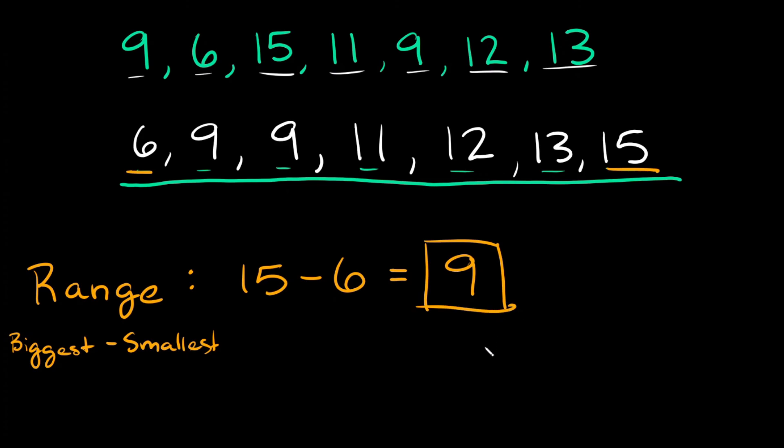Alright guys, that is how you find the mean, median, mode, and range of a set of numbers. I hope the examples were helpful. If they were, definitely leave a thumbs up below. If you still have any questions, leave them in the comments and I'll do my best to help. There's also a playlist attached at the end of the video if there are any other topics you need help with. I'll see you there.